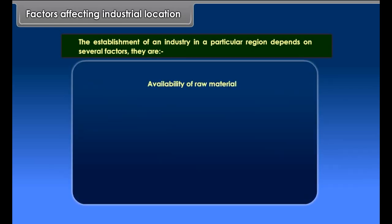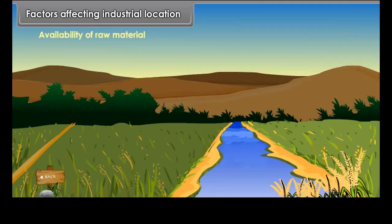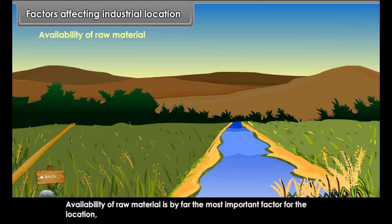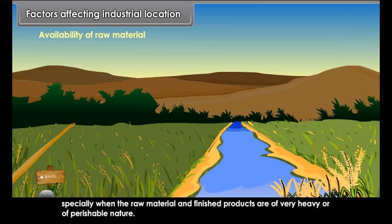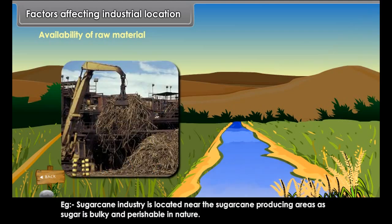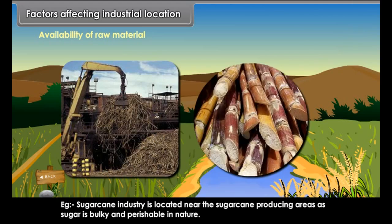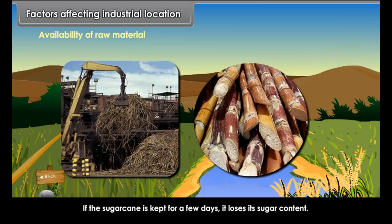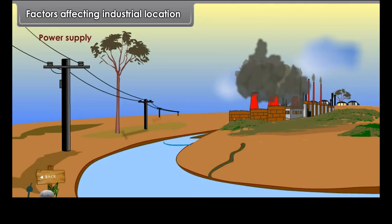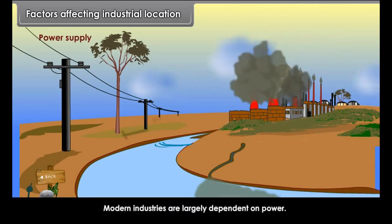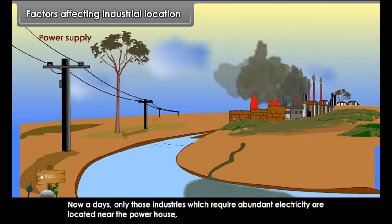The establishment of an industry in a particular region depends on several factors: availability of raw material, power supply, labour, transport, capital investment, markets, and water supply. Availability of raw material is the most important factor for location, especially when the raw material and finished products are heavy or perishable. For example, sugarcane industry is located near sugarcane-producing areas because sugar is bulky and perishable — if kept for a few days, sugarcane loses its sugar content.